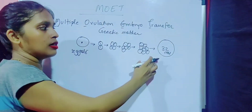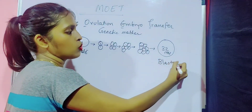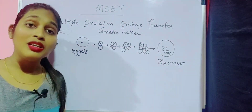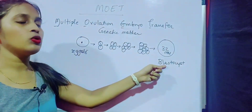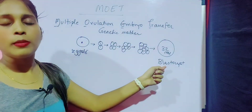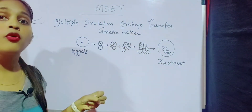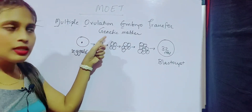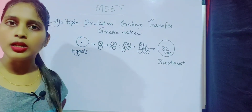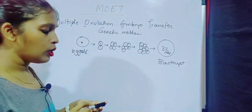Eventually there is a 32-cell stage, which is called the blastocyst. Once the female reaches the blastocyst level, the blastocyst is removed from the genetic mother non-surgically.